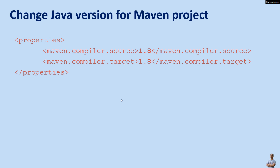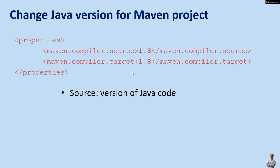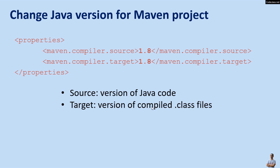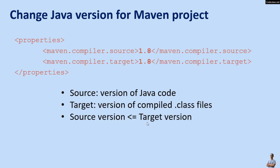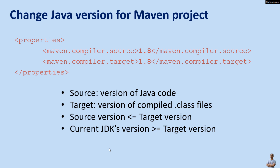Basically, to change Java version for a Maven project you need to specify a couple of properties in the Maven pom.xml file: maven.compiler.source and maven.compiler.target. Note that the source version is the version of Java code and target is the version of compiled class files, and the source version must be less than or equal to the target version.